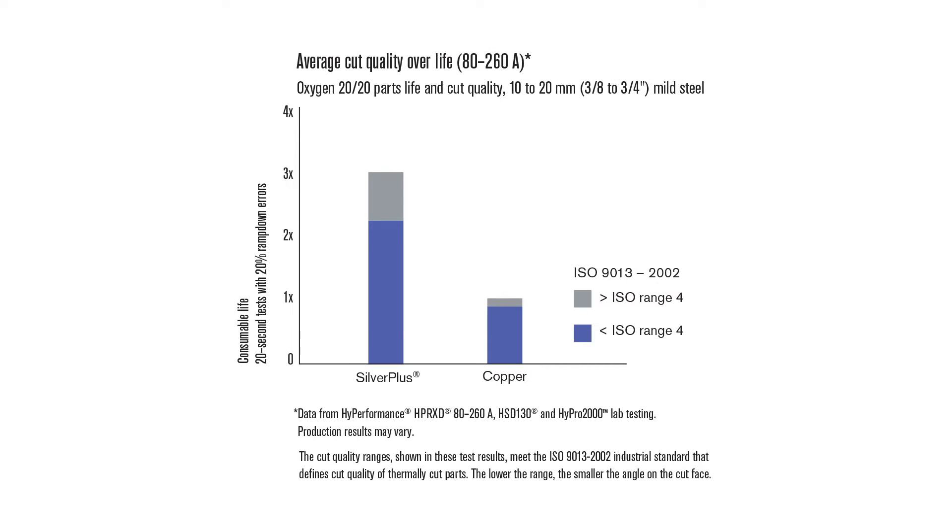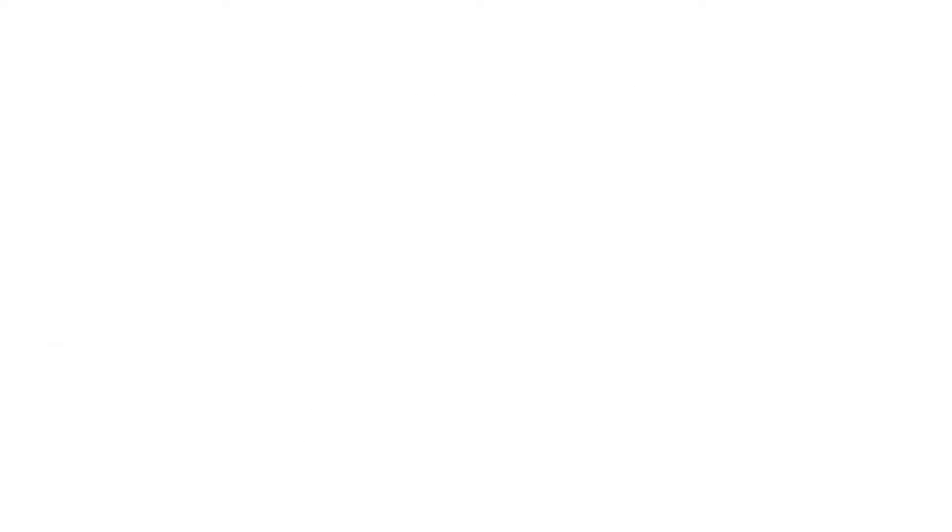Silver Plus electrodes typically provide twice the electrode and nozzle life compared to all copper electrodes. This video will highlight the differences in the way silver and copper electrodes wear.